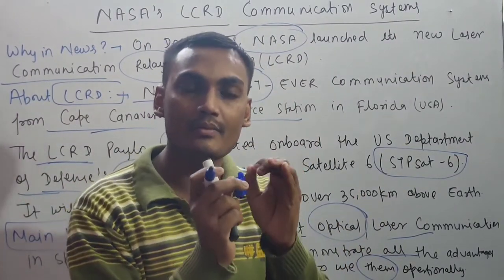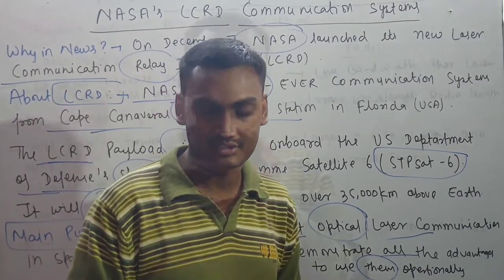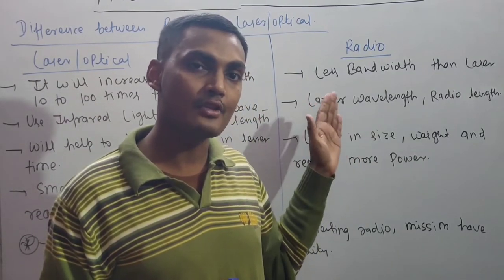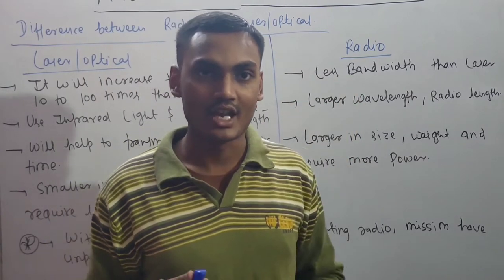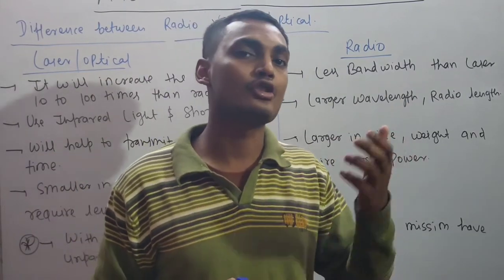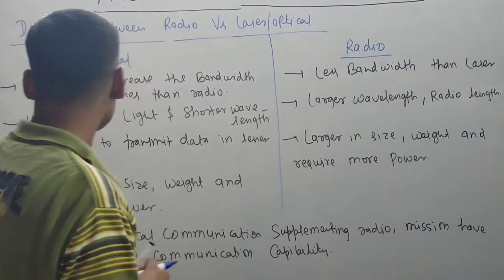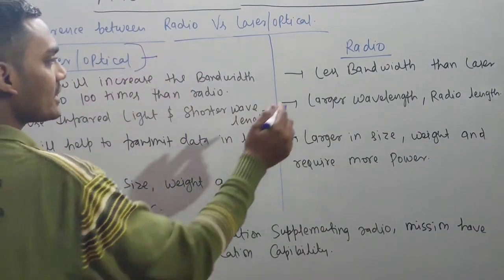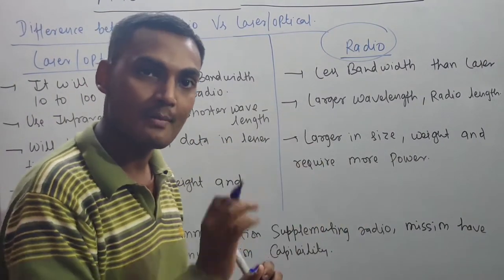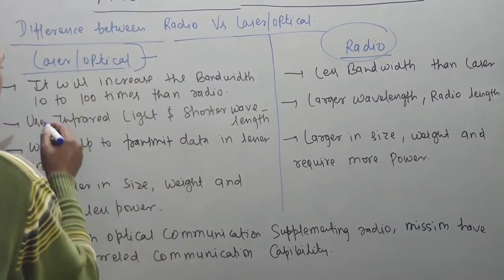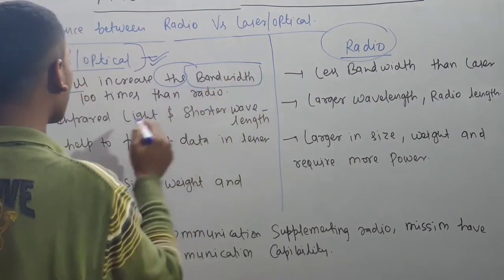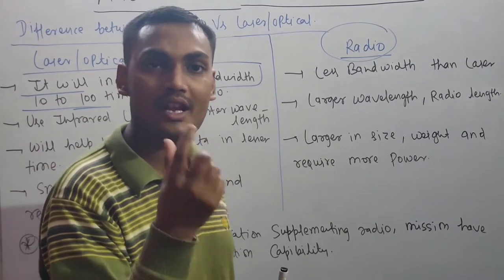All earlier NASA missions used radio frequency. Now, for the first time, they are using laser or optical communication. The key difference is bandwidth: laser communication increases bandwidth from 10 to 100 times compared to radio. This increase in bandwidth is directly related to faster data transfer speeds.